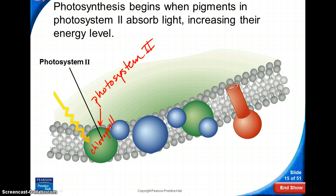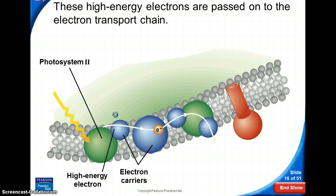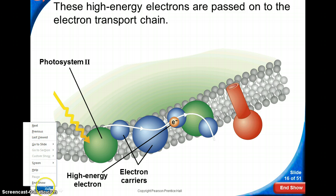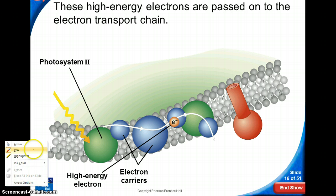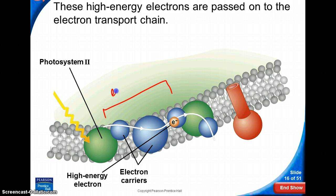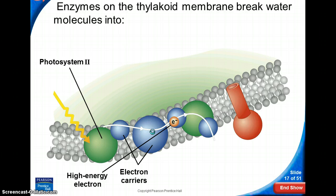And when it gets excited, it starts the process of the electrons moving through these electron carriers, through a whole process that is called the electron transport chain. And remember, these molecules here, their only purpose, is to move those electrons through. And we'll see later why this is so important, that the electron moves through this one here.